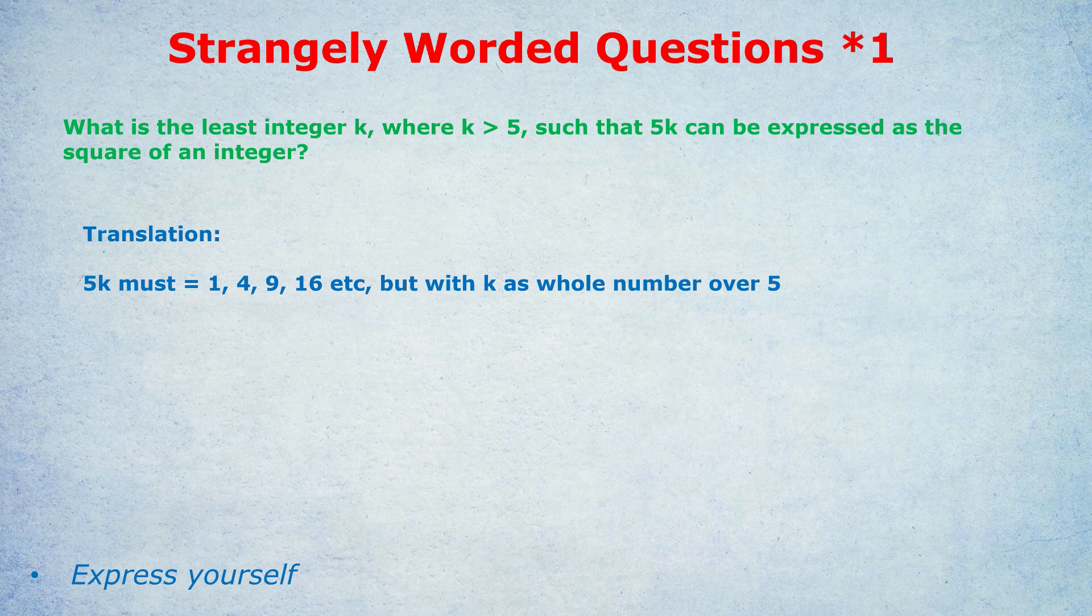But of course, k has to be an integer, a whole number. So 5k can't equal 1, can't equal 4, because k wouldn't be a whole number. In other words, we're looking for a multiple of 5. Now the question doesn't sound as scary.